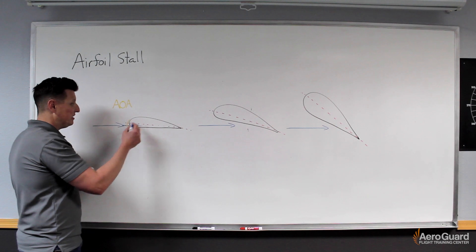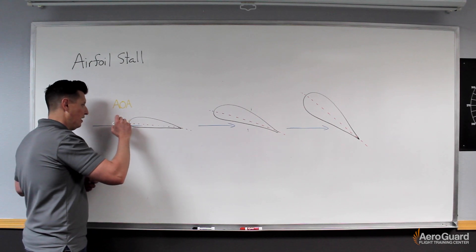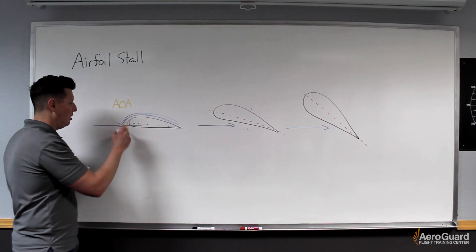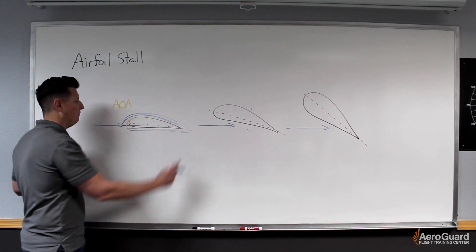In this example, we notice that the airflow will end up coming over the wing like so and then it basically remains fairly flat across the bottom.